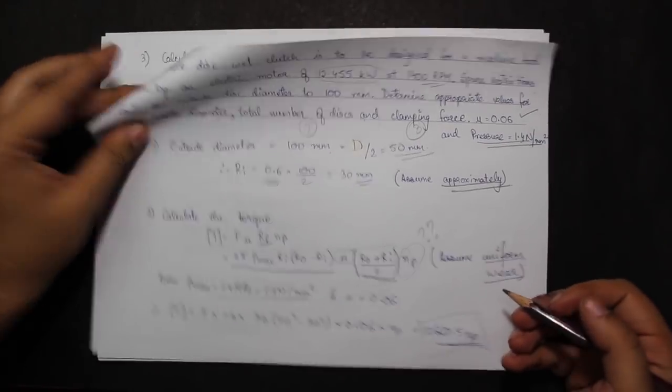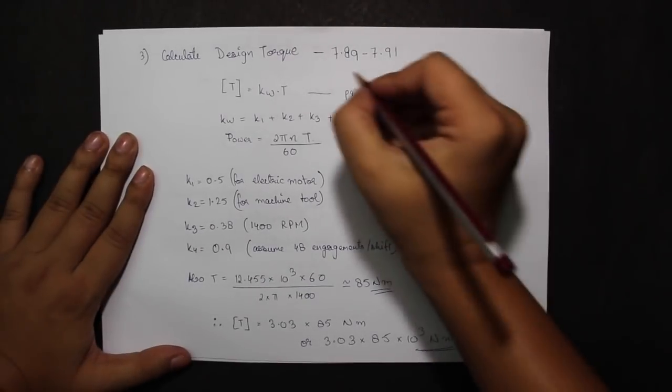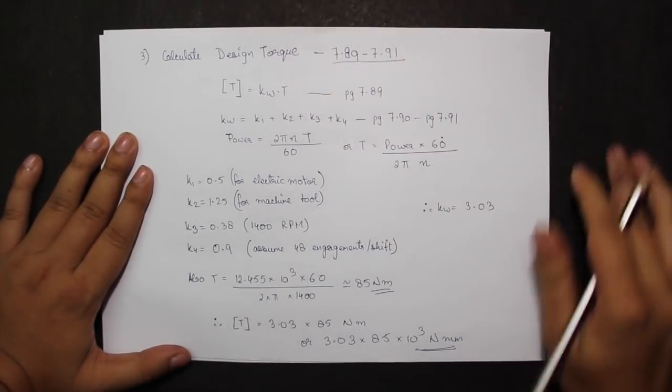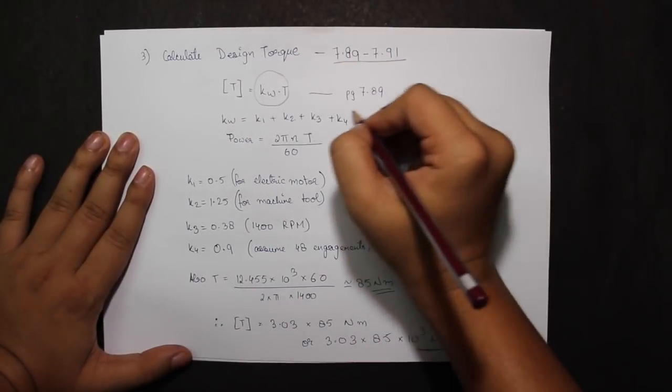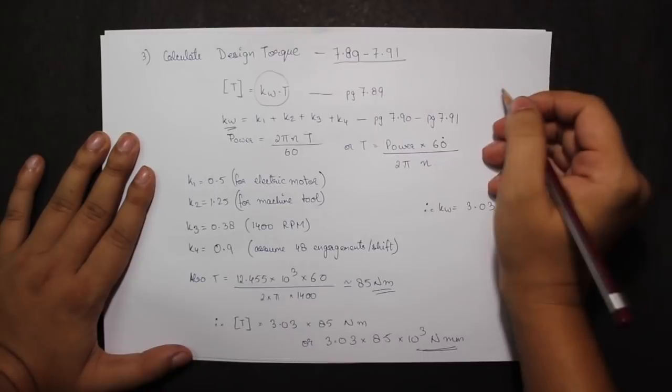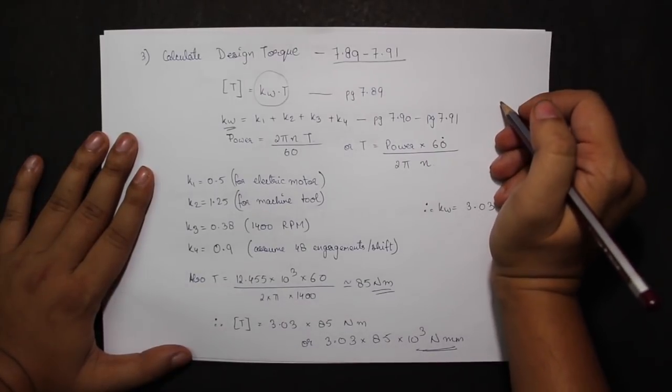I can also calculate the design torque from pages 7.89 to 7.91. Design torque is given by Kw into T, where Kw is the factor based on working conditions given on pages 7.90 and 7.91.